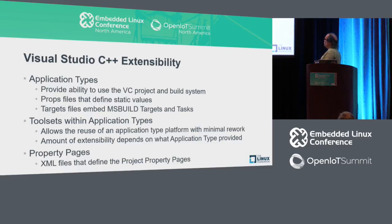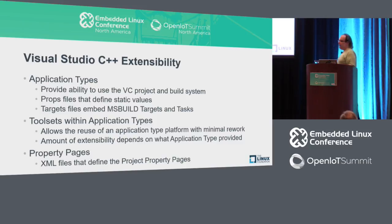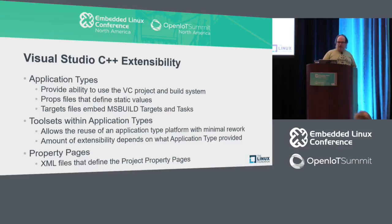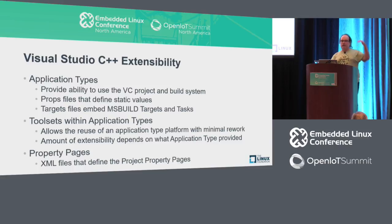The Visual Studio C++ project system has a bunch of different extensibility points. One is application types — these provide a way for the Visual C++ project system and build system to define things for the MSBuild system. There are property files that define static named value pairs, and target files that embed MSBuild targets and tasks. Within those there are toolsets, which allow a lot of reuse of the application type with minimal rework. The application type we provide as part of the Linux workload is Linux. You can go in there and copy our toolsets to create your own that leverage all of that existing infrastructure. And there are property pages — little XML files that define the flags to pass to GCC.